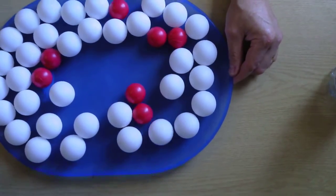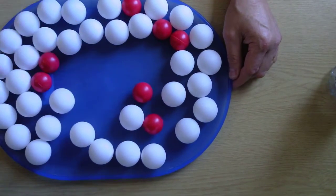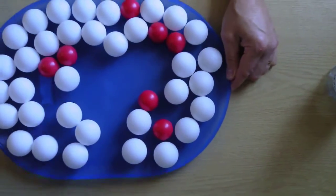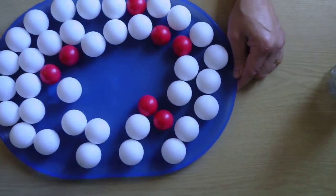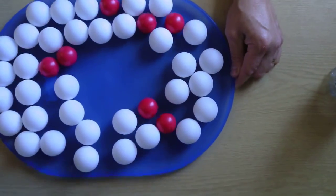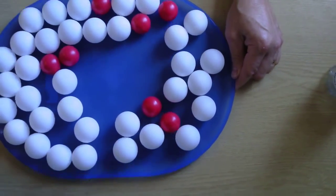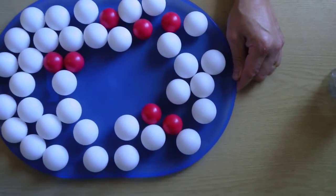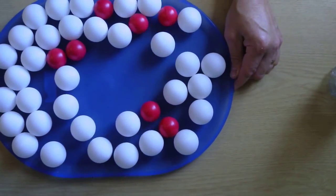So we started off with a high concentration of red balls in the middle. They diffused down their diffusion gradient and are now more equally distributed in the medium.